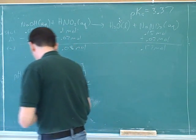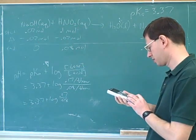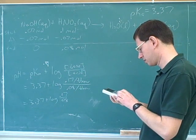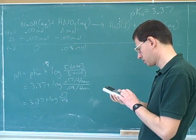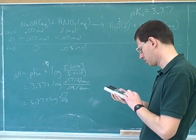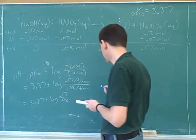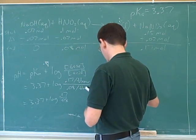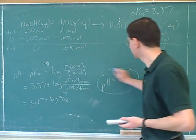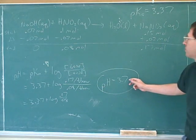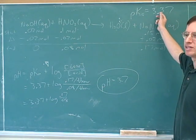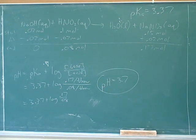So let's see if our estimate was right. So I ended up with a pH of 3.7, which really was not a very big change. So our estimate of 4 was right.